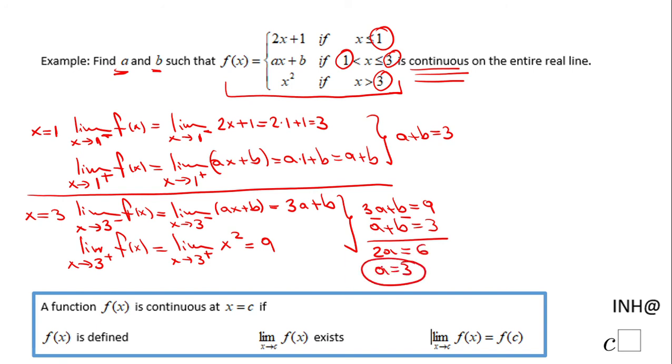So that's the first value. For b, I can use any equation, but I'm going to use a plus b equals 3. Since a is 3, b should be 0.